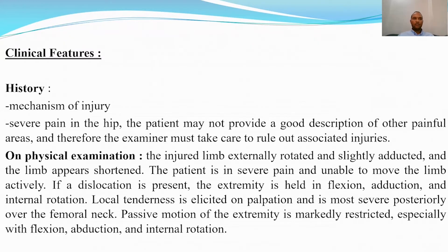Regarding the clinical features of pediatric hip fractures, you should take a good history about the mechanism of injury and the site of pain. Usually the child cannot give a good description of other painful areas, so you should search for associated injuries. On physical examination, the fractured limb is externally rotated, slightly adducted, and the limb appears short. The patient is in severe pain and unable to move the limb actively.